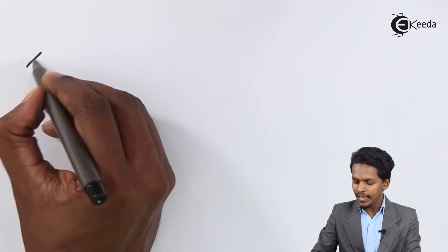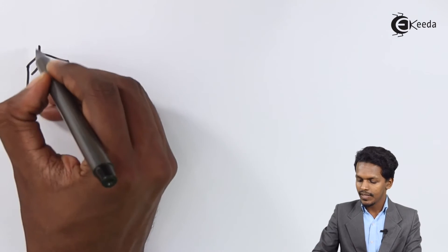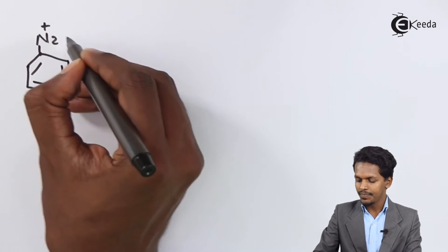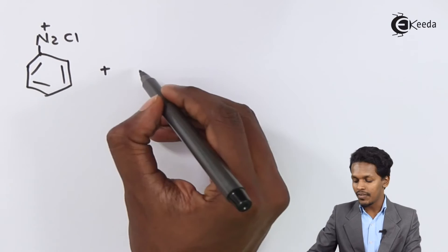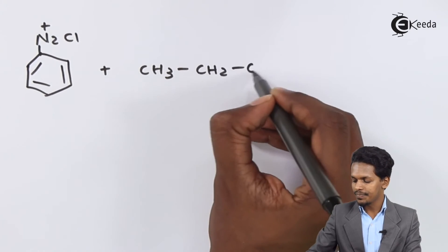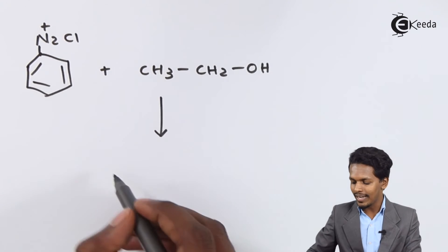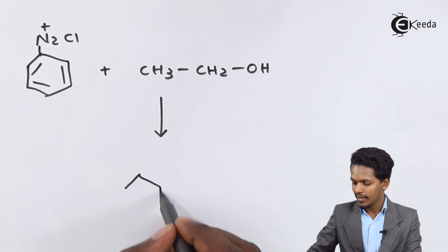Now for the specific example, if I'm considering benzene diazonium chloride and reacting it with ethanol, CH3-CH2-OH, the reaction will proceed such that we get the main product as benzene.